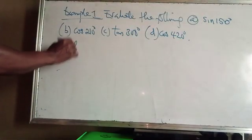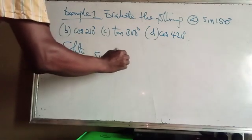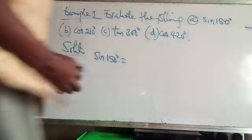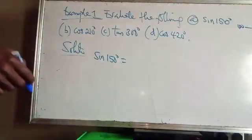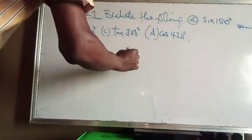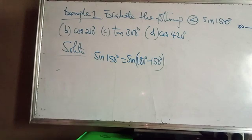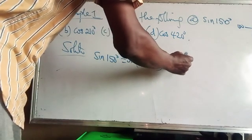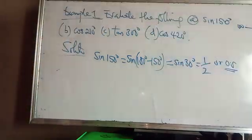Let's quickly solve these — they are very simple. For sine 150°: 150° is in the second quadrant, so it's going to be positive. The equivalent expression is sin(180° − 150°) = sin 30°. And sin 30° equals one half, or 0.5.